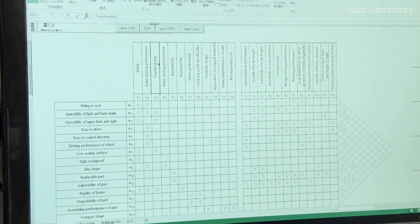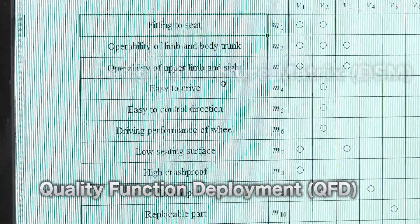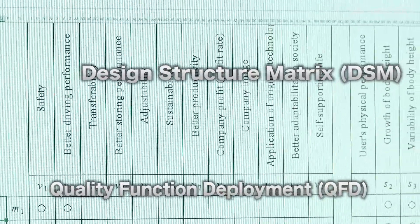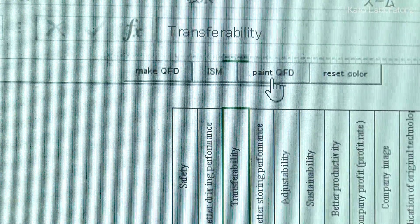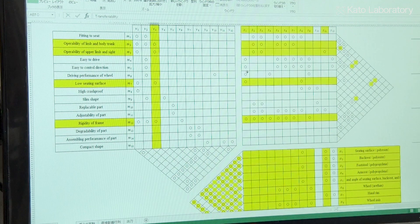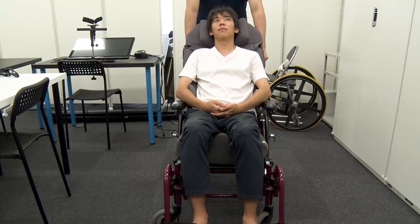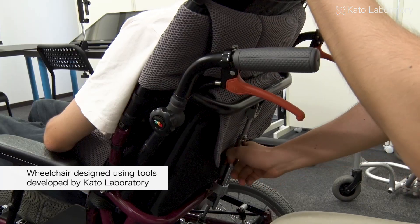The CATO laboratory uses the techniques of quality function deployment and design structure matrix, which are capable of organizing complex relationships between items such as customer design requests, function, physical characteristics, and parts, to develop tools that can visually display these relationships in an easy-to-understand manner. The laboratory is also developing products that use these tools.